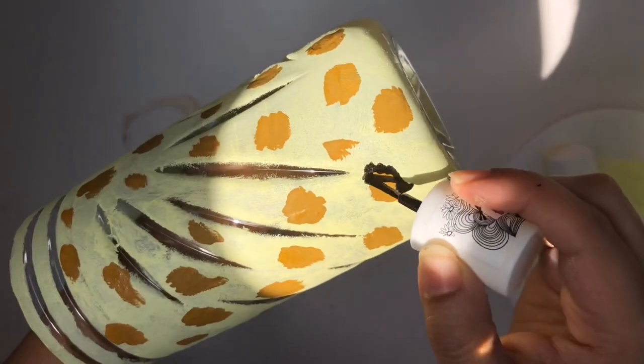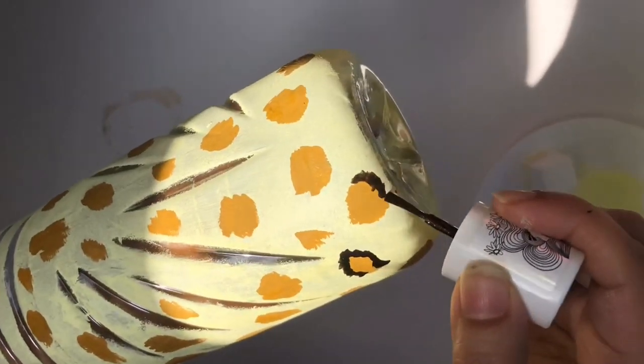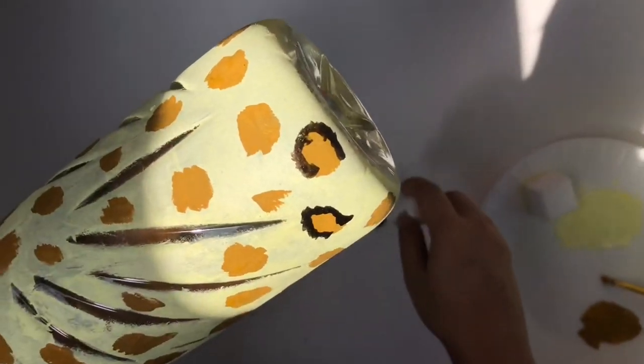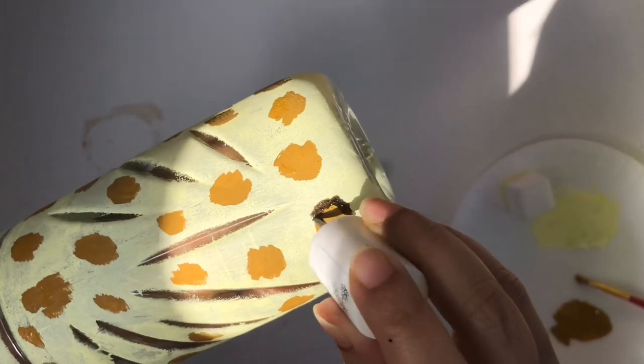Now, outline these patches with your black nail polish. I'm using this nail polish because it's very old and this is a really good way to reuse old nail polish that you won't use on your nails anymore.